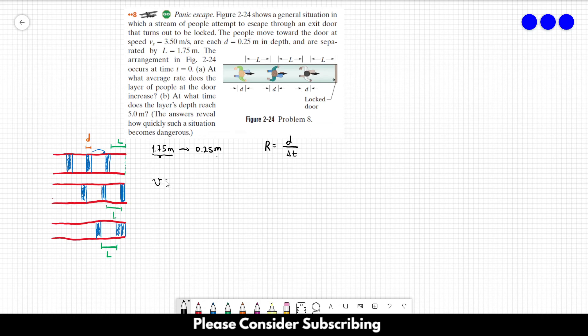We can find it by using V equals delta X over delta T. We know that the velocity is 3.5. We want to find delta T, so it would be delta X over V. Delta X is 1.75. The velocity is 3.5, so delta T equals 0.5 seconds.